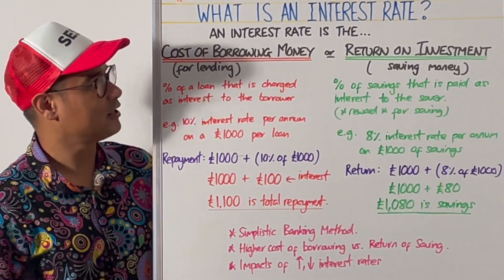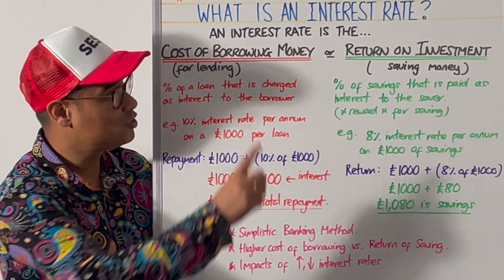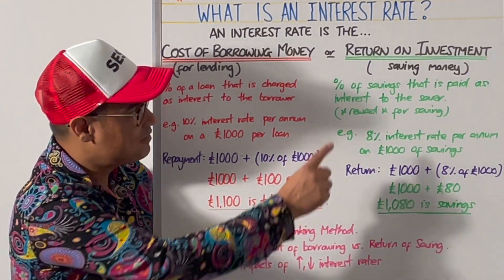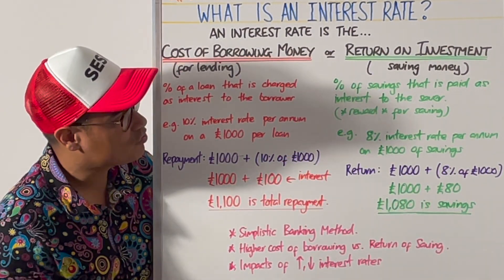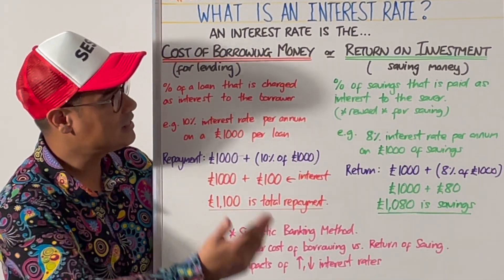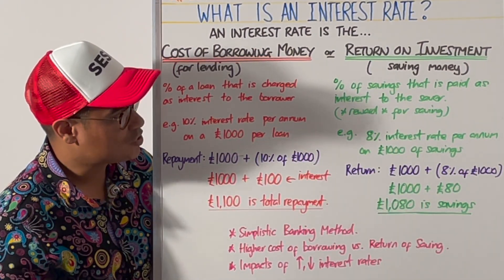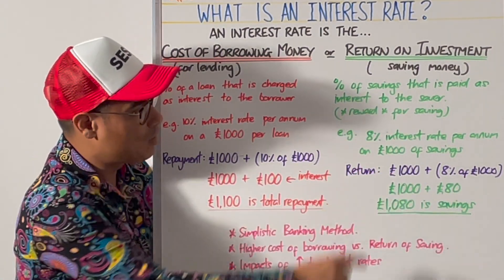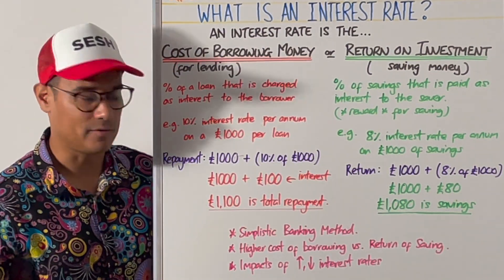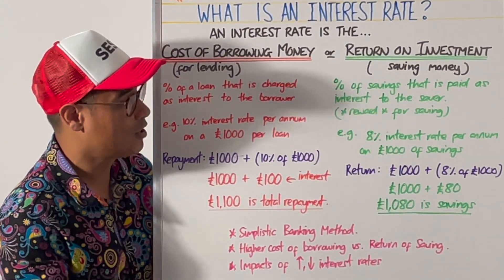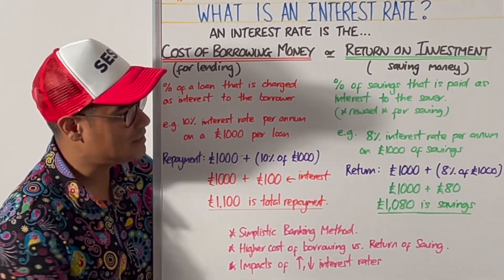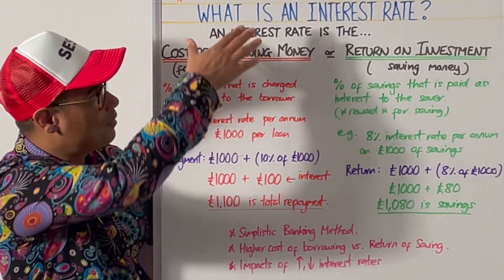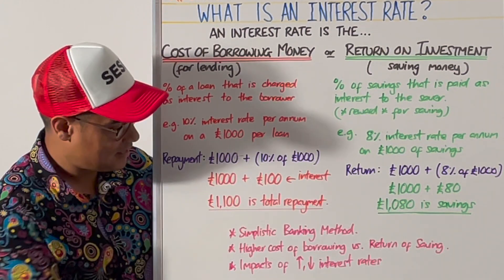On the savings side, the interest rate is the return on investment — the reward for putting your money in a bank. For example, you might get an 8% interest rate per annum on £1,000 of savings. Your £1,000 stays in the bank, and the reward is 8% of £1,000, which is £80. Add those together and you get £1,080. So those are two examples: the cost of borrowing money and the return on investment from saving money.